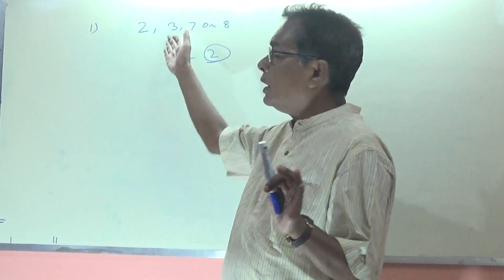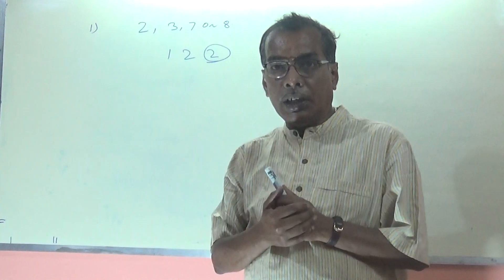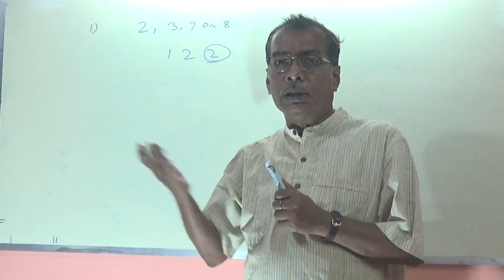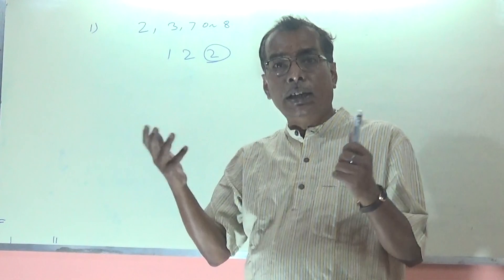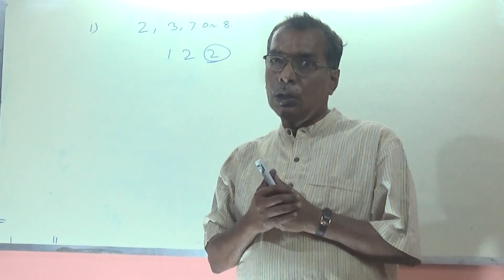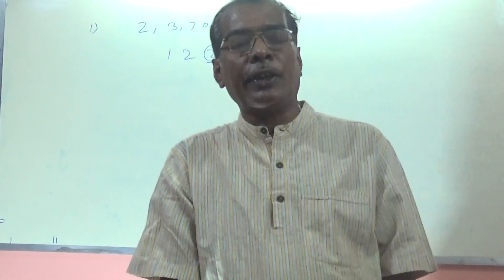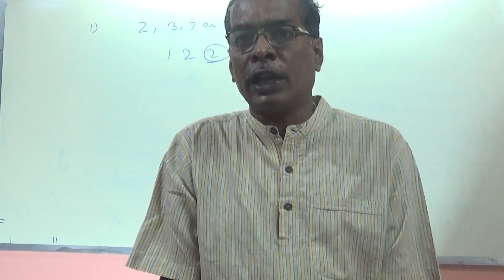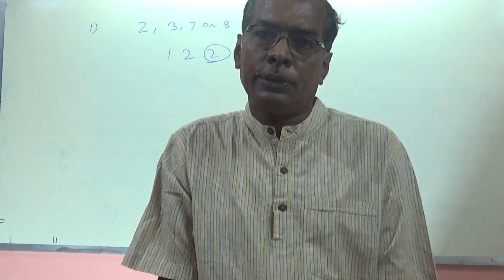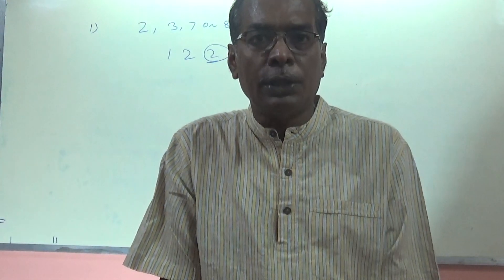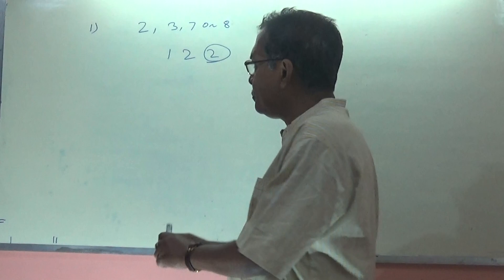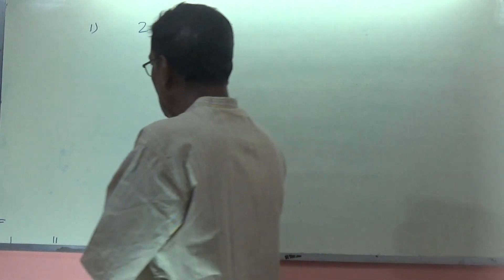Similarly, if a number is ending with 3, it is not a perfect square. Similarly, if ending with 7, it is not a perfect square. Similarly, if ending with 8, it is not a perfect square. So a number ending with 2, 3, 7, or 8 is not a perfect square. This is rule number one.